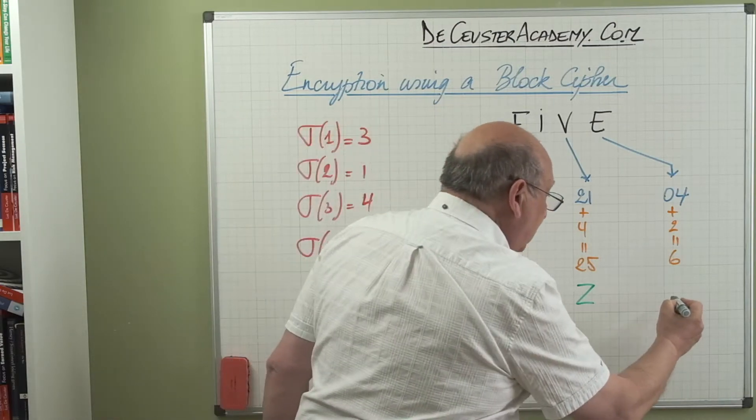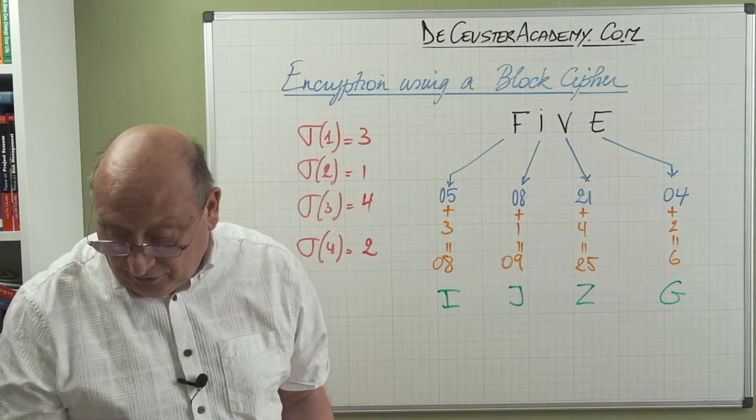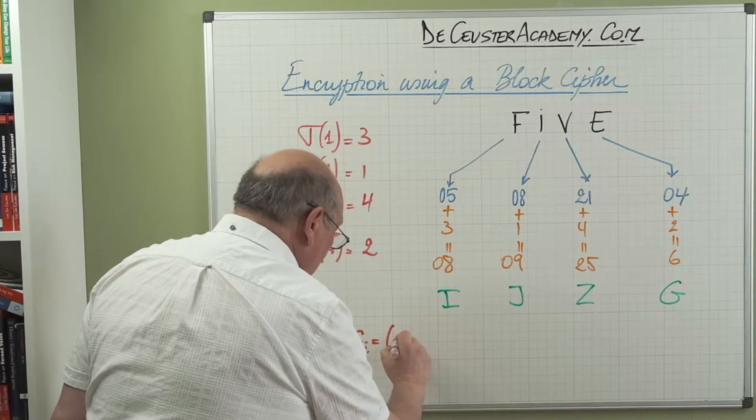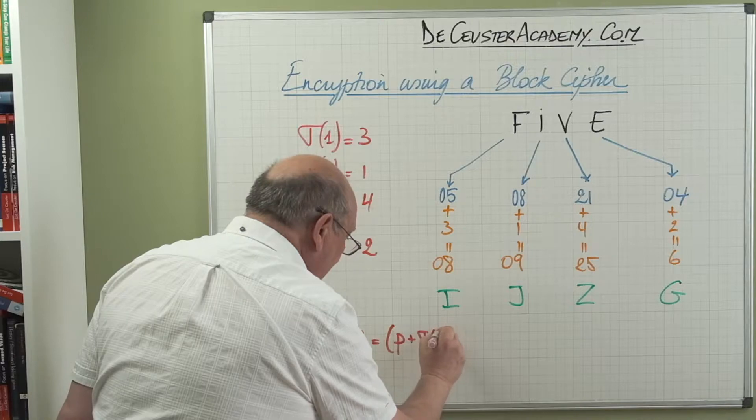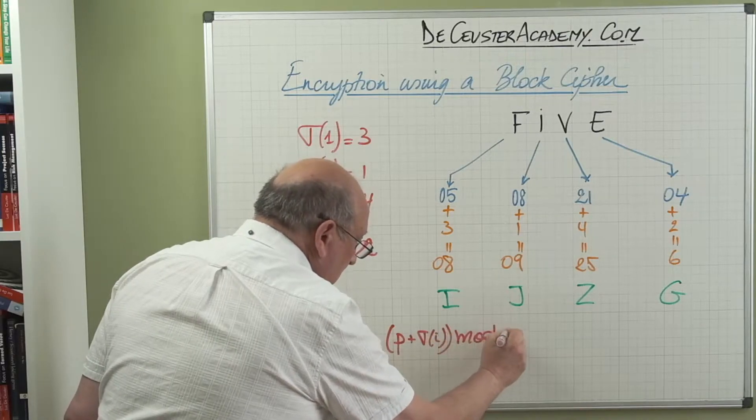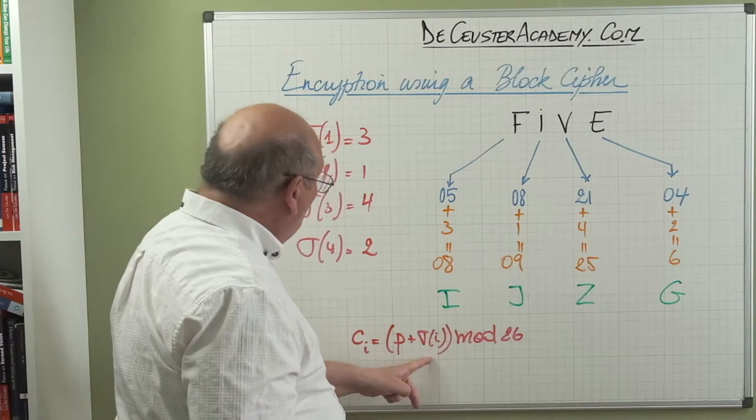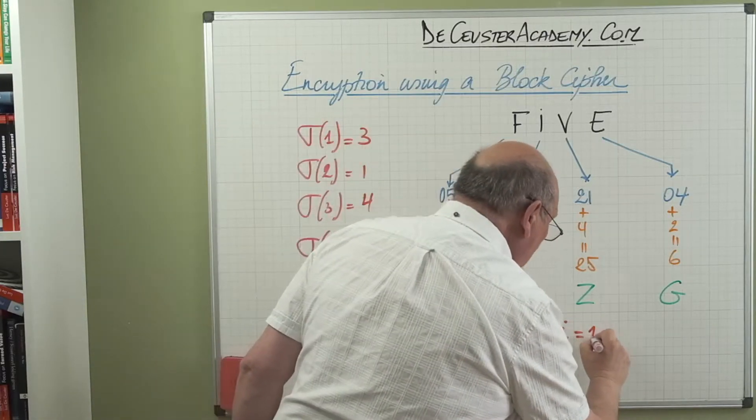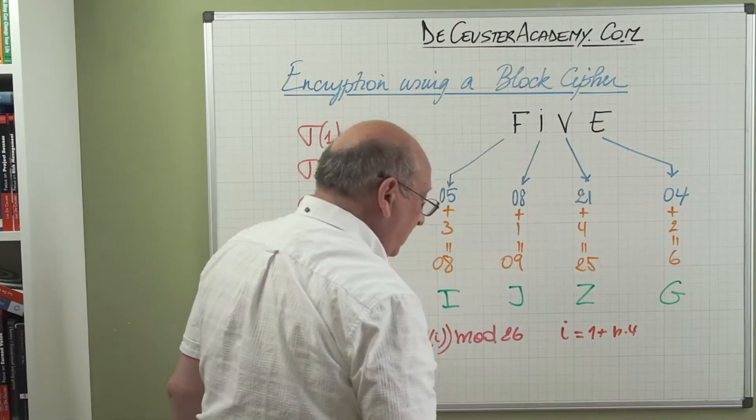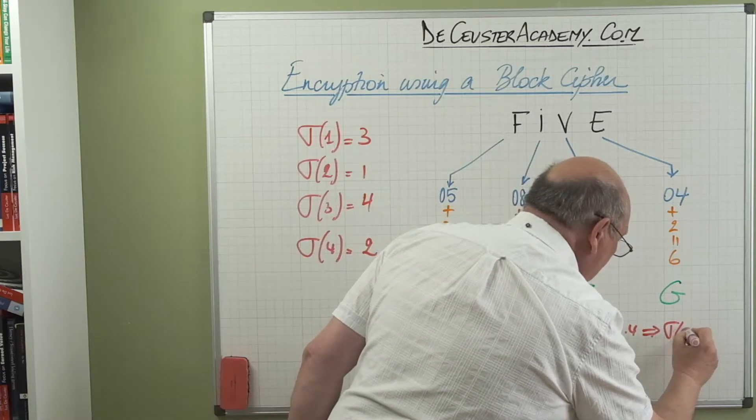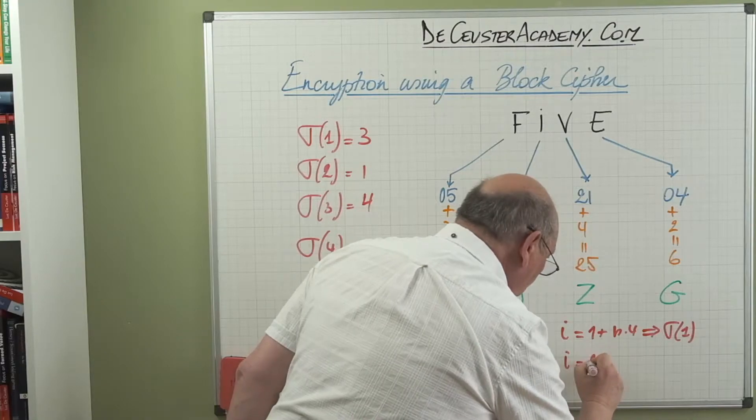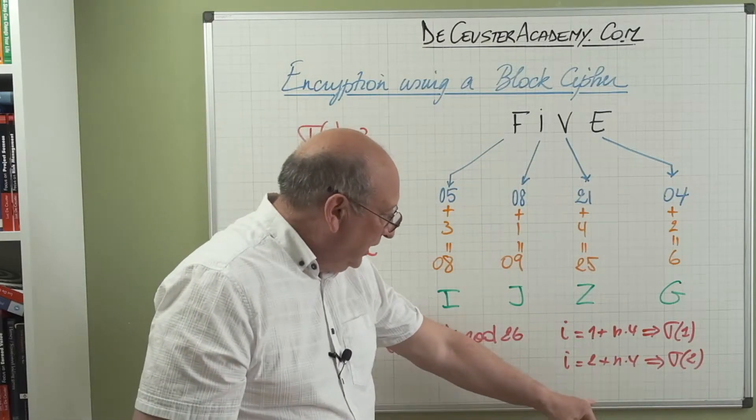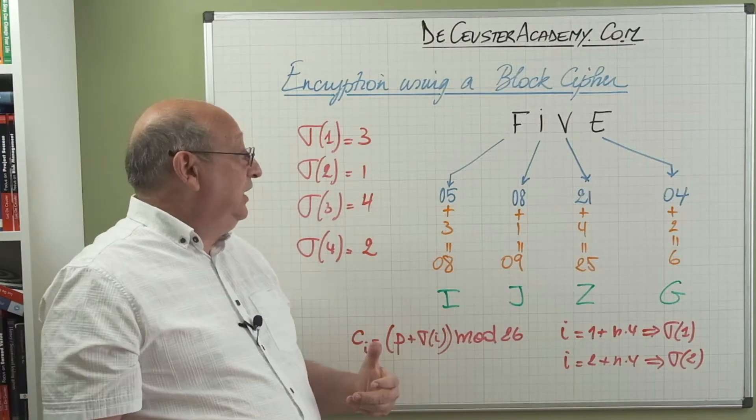And that new message is the first letter is I, then I have J, then we have 25 corresponds with Z, and then we have G. Basically what we are doing here, we are in fact writing this as C_I is equal to the value plus sigma_I modulo 26. And we have every time, when I is equal to one plus n times four, we have sigma equals three, and so on. So that's basically how to encrypt using a block cipher.